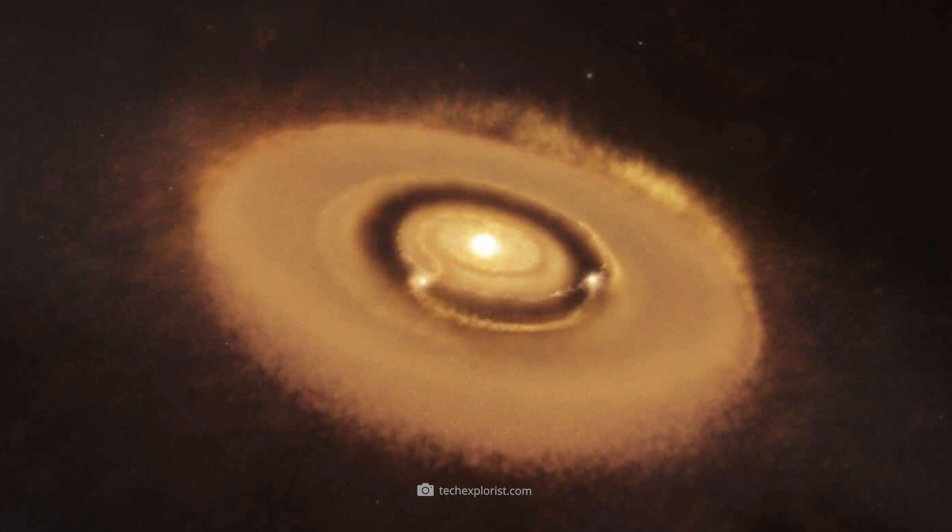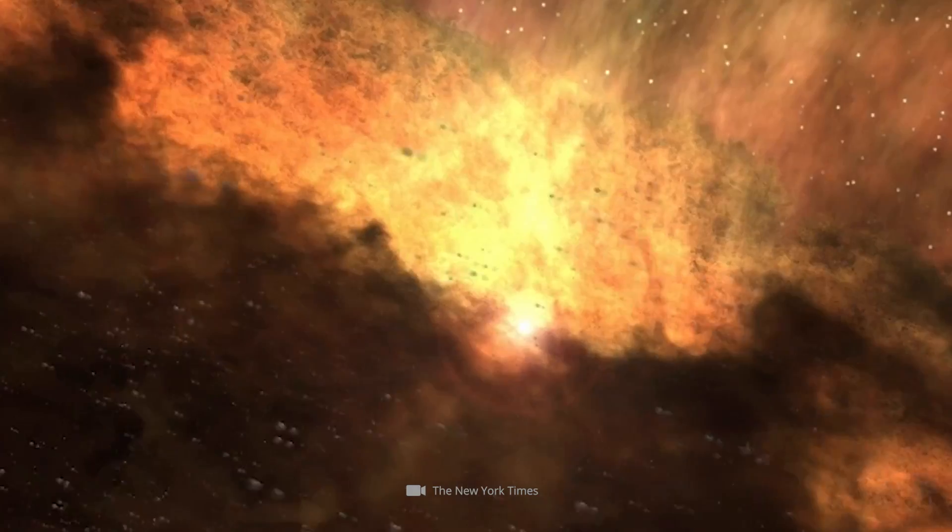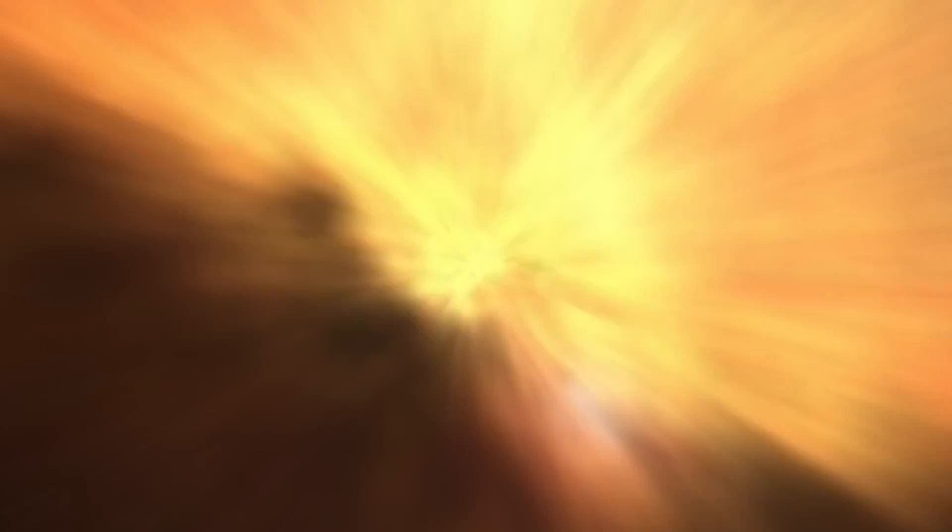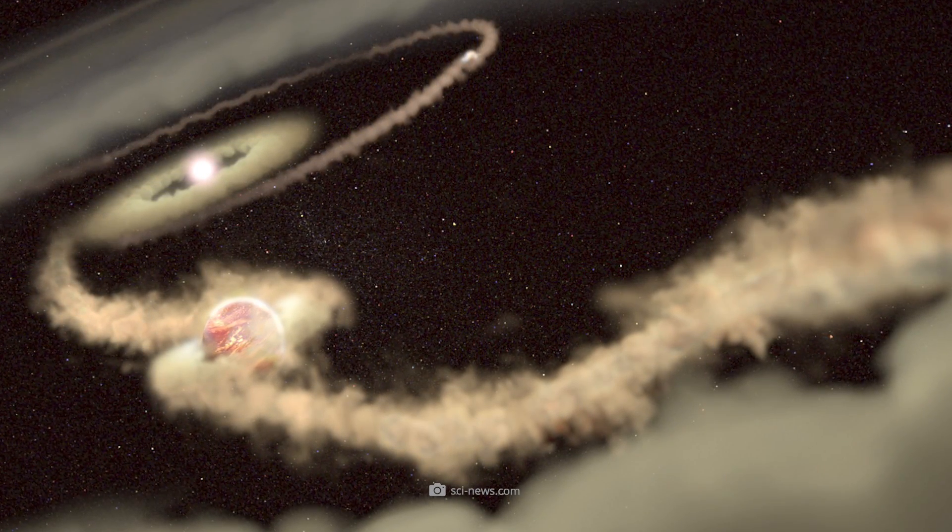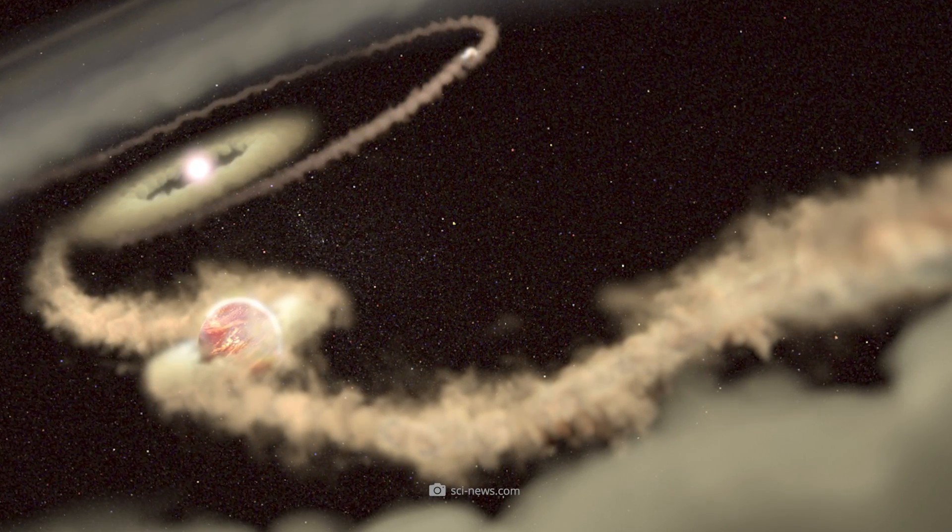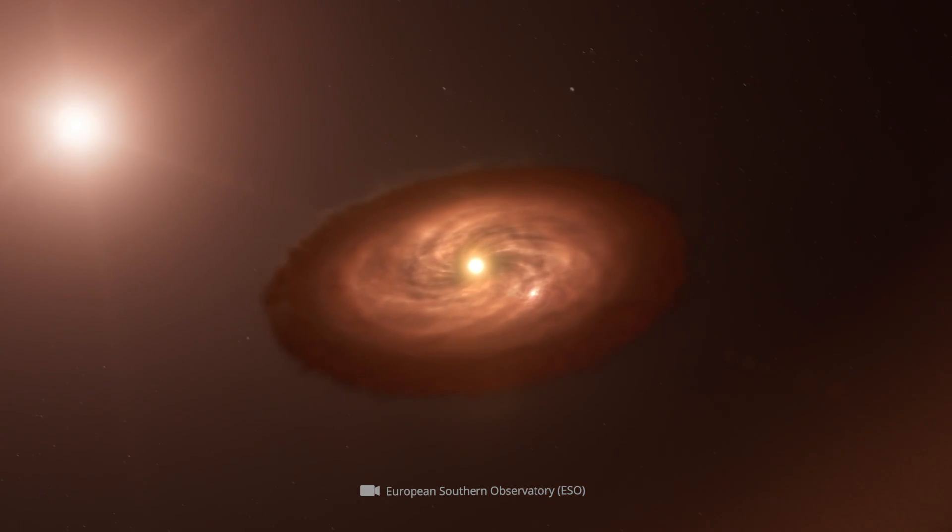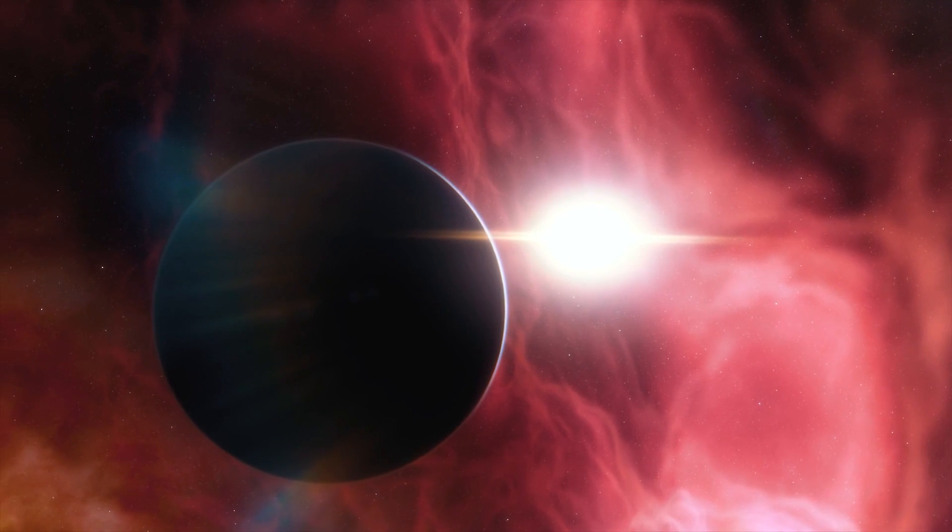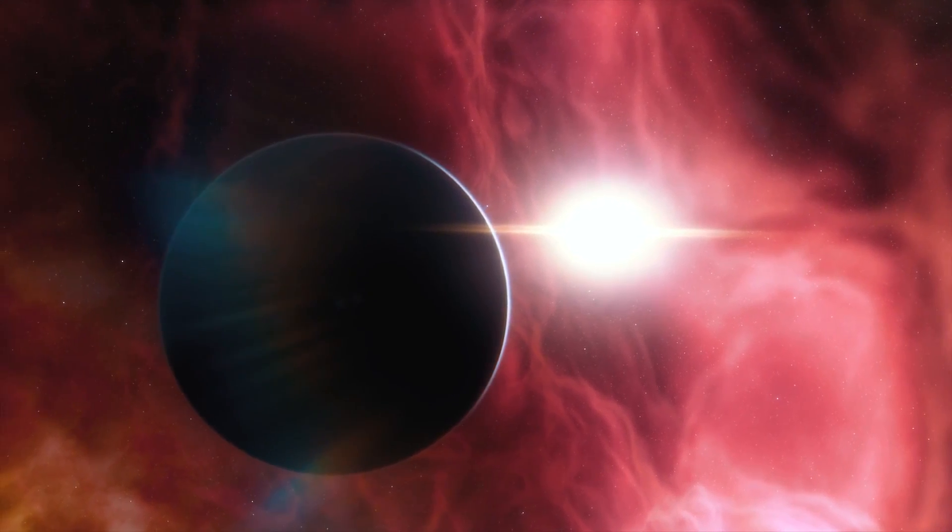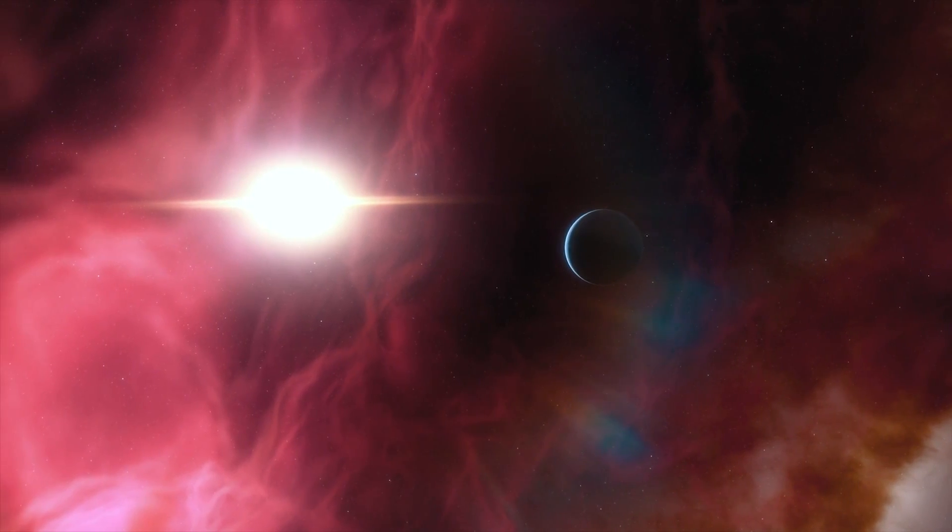In fact, PDS-70B and PDS-70C are currently the only known exoplanets that have not completed their evolution. Yet, we have only known of the existence of these two giant planets since 2018 and 2019. So while PDS-70C is demonstrably surrounded by a moon-forming disk, experts could find no evidence that such a collection of matter also exists around PDS-70B.